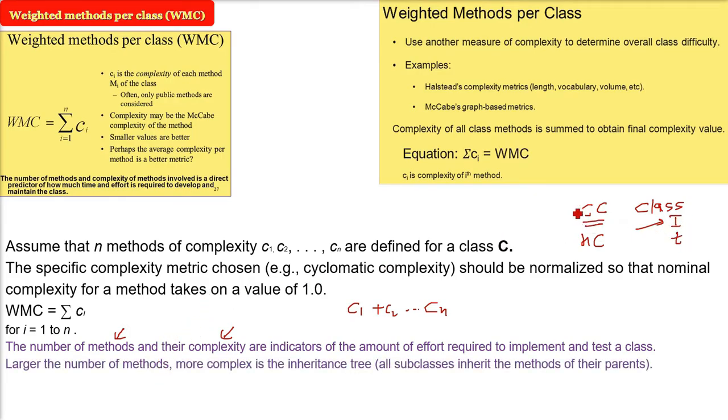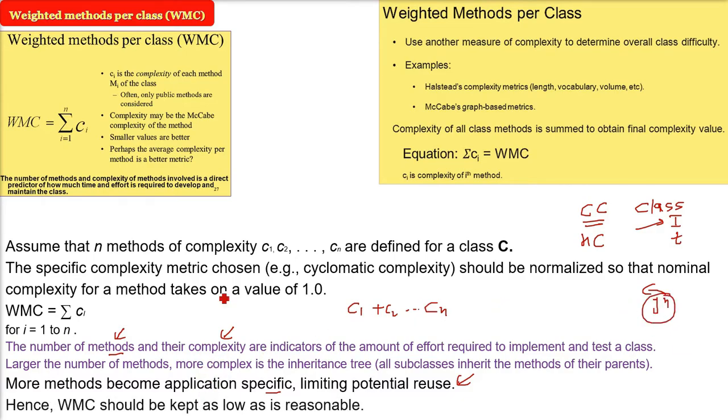So this is a clear indicator WMC of how much effort you are going to put and how much effort in testing also. If you have large number of methods, more complex is the inheritance tree because all the subclasses are going to inherit the methods of their parents. More methods, if they are very application specific or software specific, we may not be able to reuse them again, so limiting the potential reuse. Therefore WMC should be kept as low as possible, as low as reasonable.